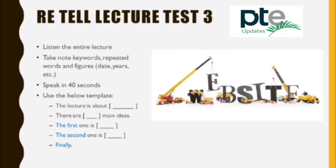What we do when we set up websites is to group users based on their needs. For a website in the academic community, for example, we may have groups such as researchers and administrators, and this helps us design the site and add information that is relevant to each group.